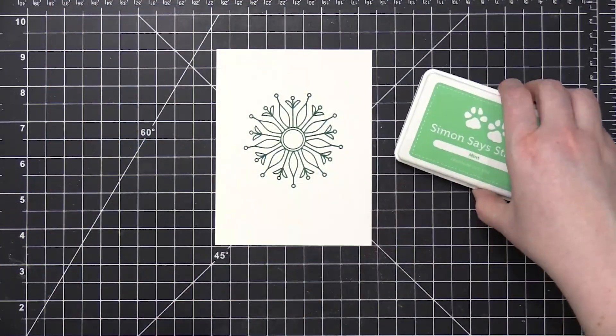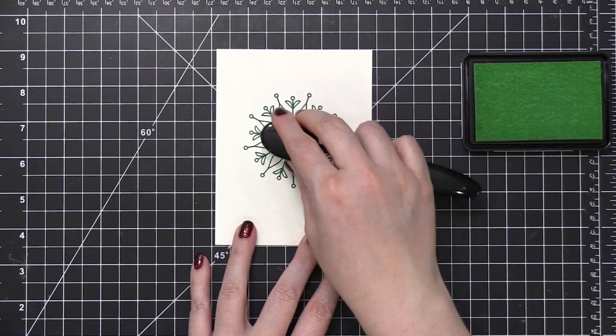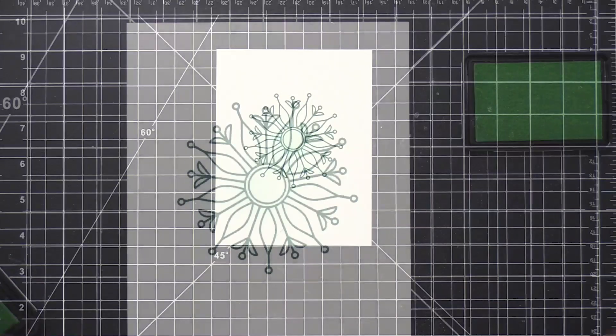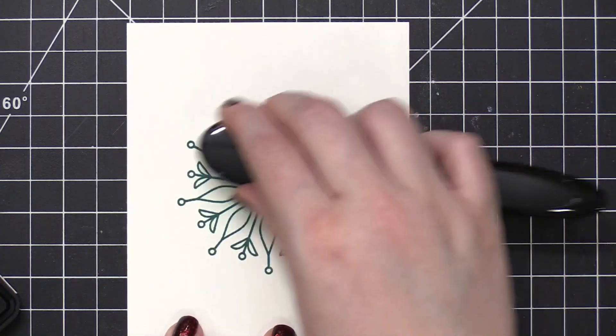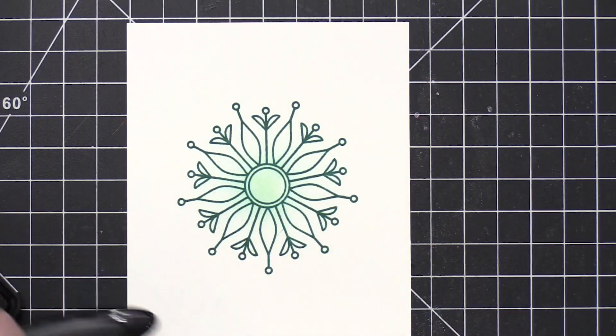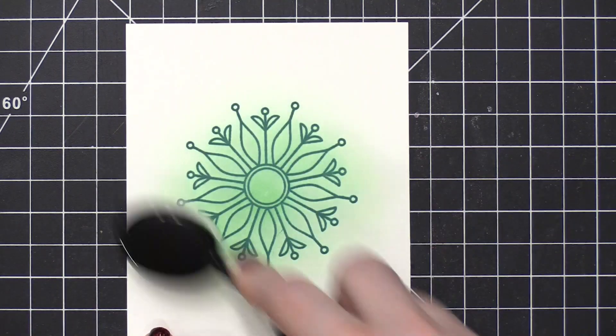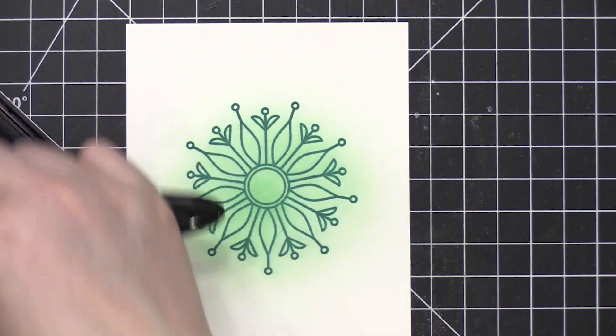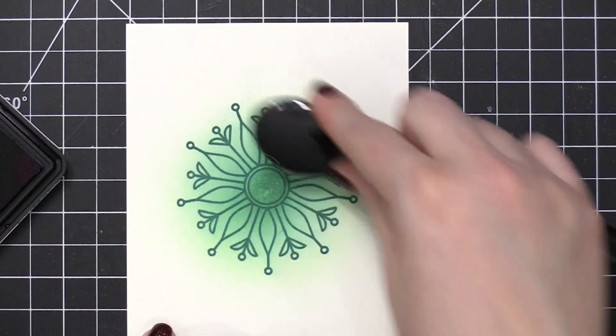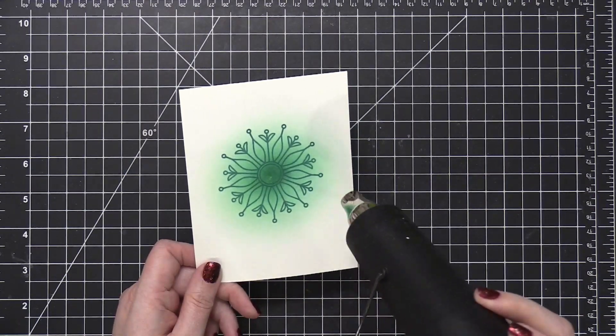So now I'm going to take some mint ink from Simon and also a blender brush. This is a blender brush from Honey Bee. And I'm going to just take this mint ink and bring it out from the center of the snowflake. I want it to be a really pale green ink. I don't want it to compete too much with the teal ink that I've already stamped. Now it was looking pretty good at this point, but I did want to intensify the center area of that snowflake. So then I did break out that teal ink and just added it very lightly in the center. Now this isn't going to compete too much with the snowflake image. I just wanted to have a little more intensity in the center.